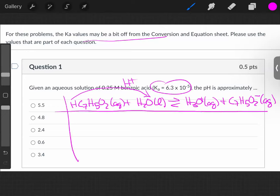This is an ICE table problem, and that's the way you have to handle all weak acids. We know that our initial concentration is 0.25 molar. Liquids are not in equilibrium constant expressions. We have approximately zero hydronium and zero benzoate.